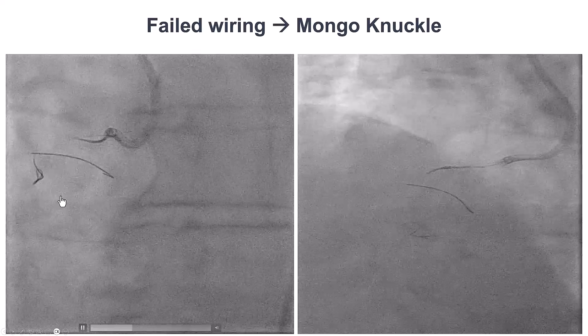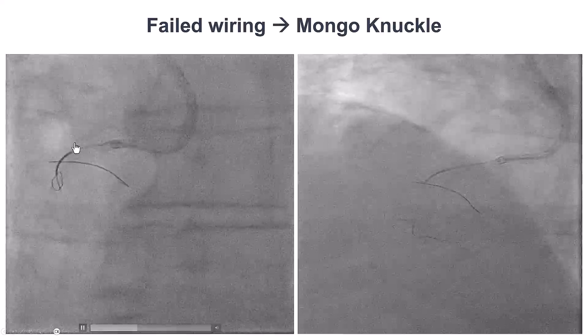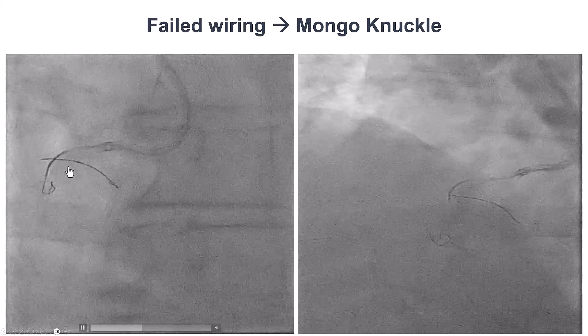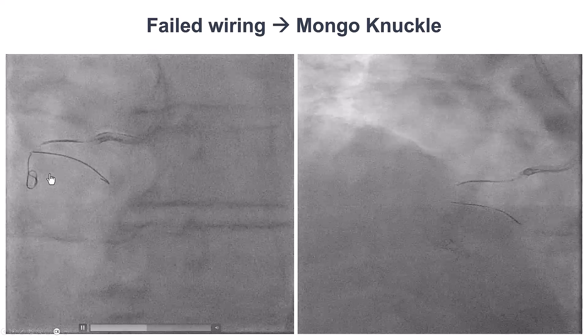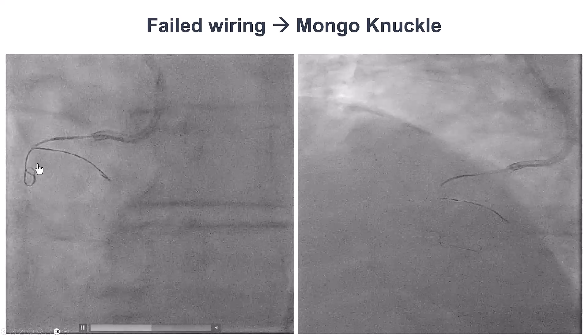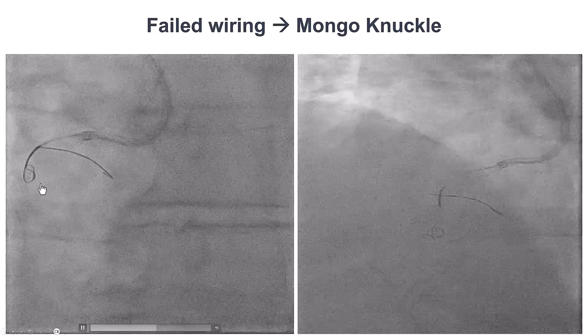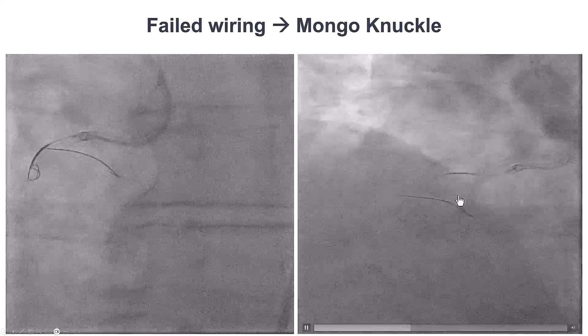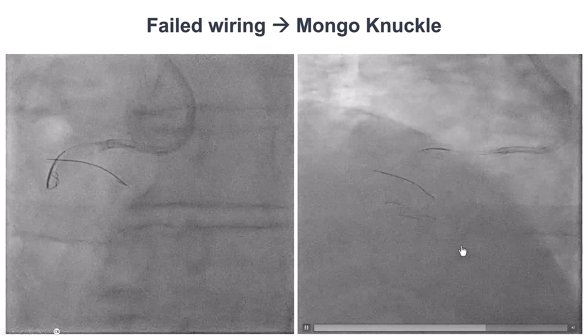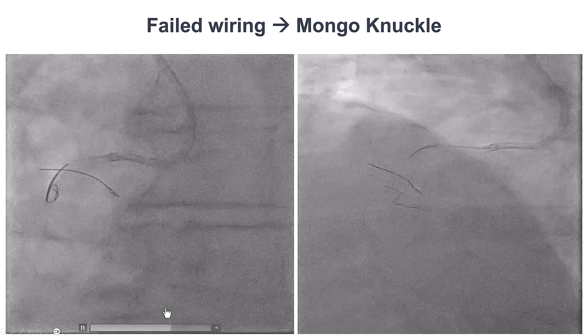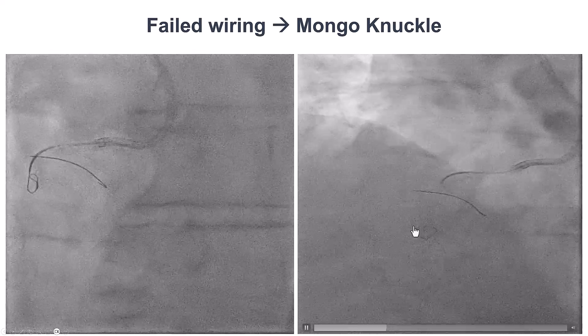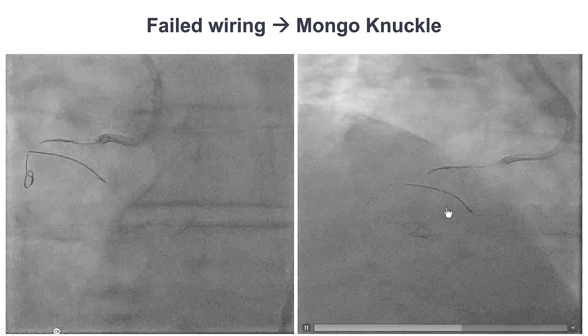Eventually we decided to use subintimal re-entry. A Gladius Mongo guide wire was knuckled across the mid-right coronary artery and advanced towards the distal right coronary artery.